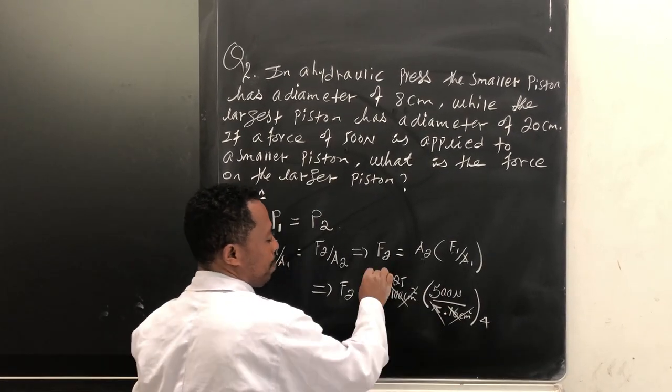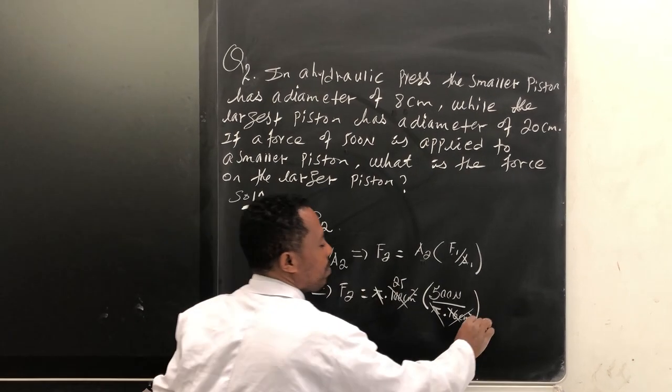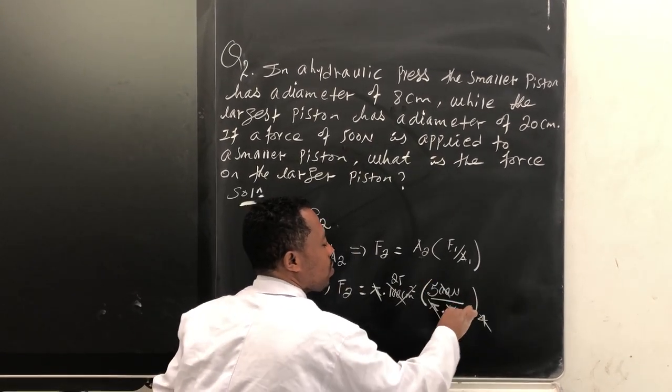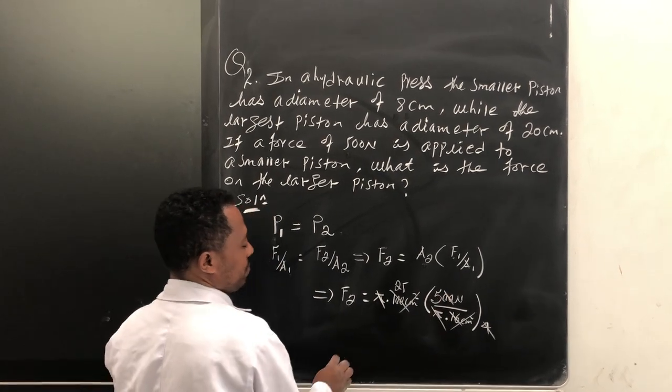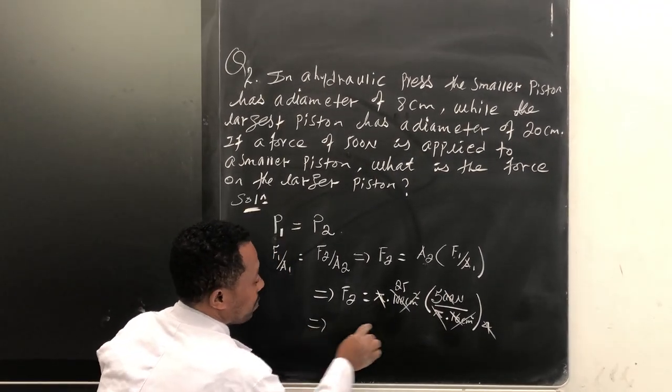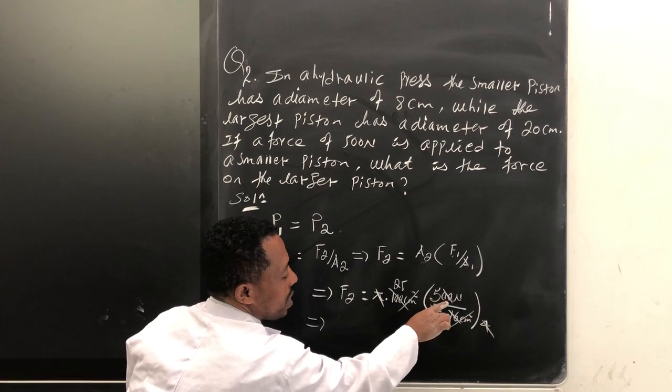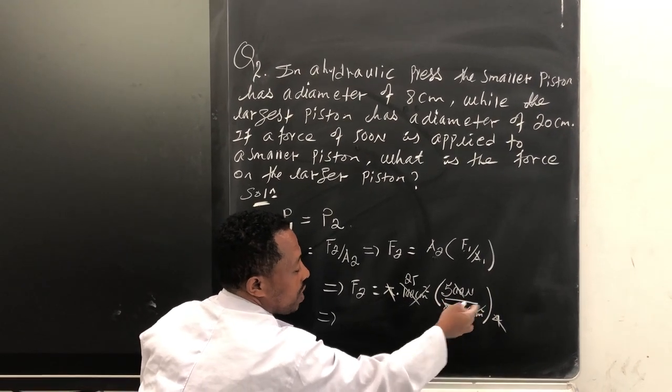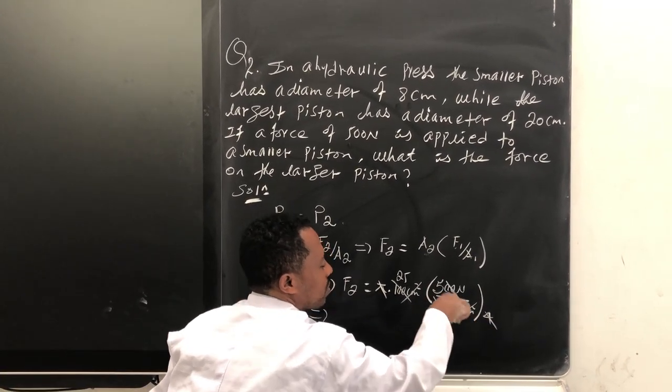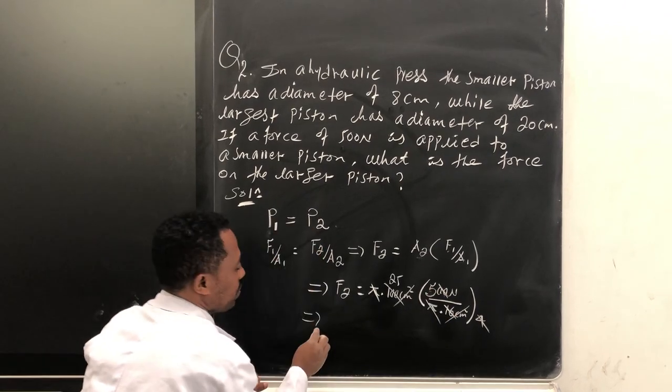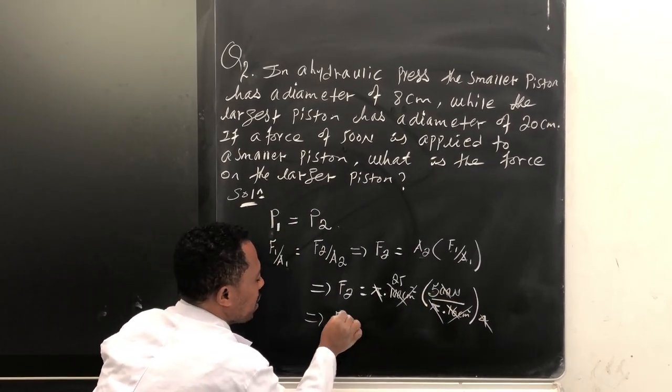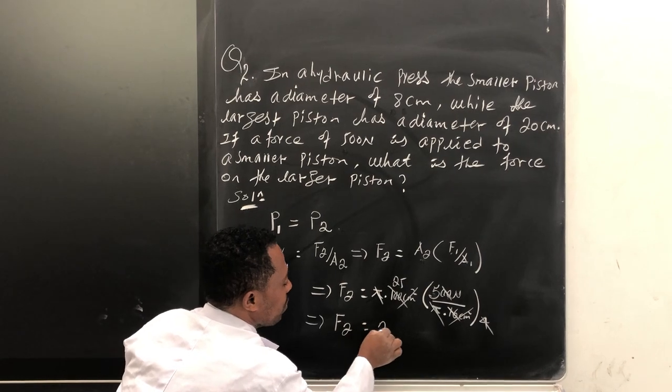Don't forget this is 5 times 100, that is 500. By 16 by 16, 25 times 5 which is 125, becomes 25